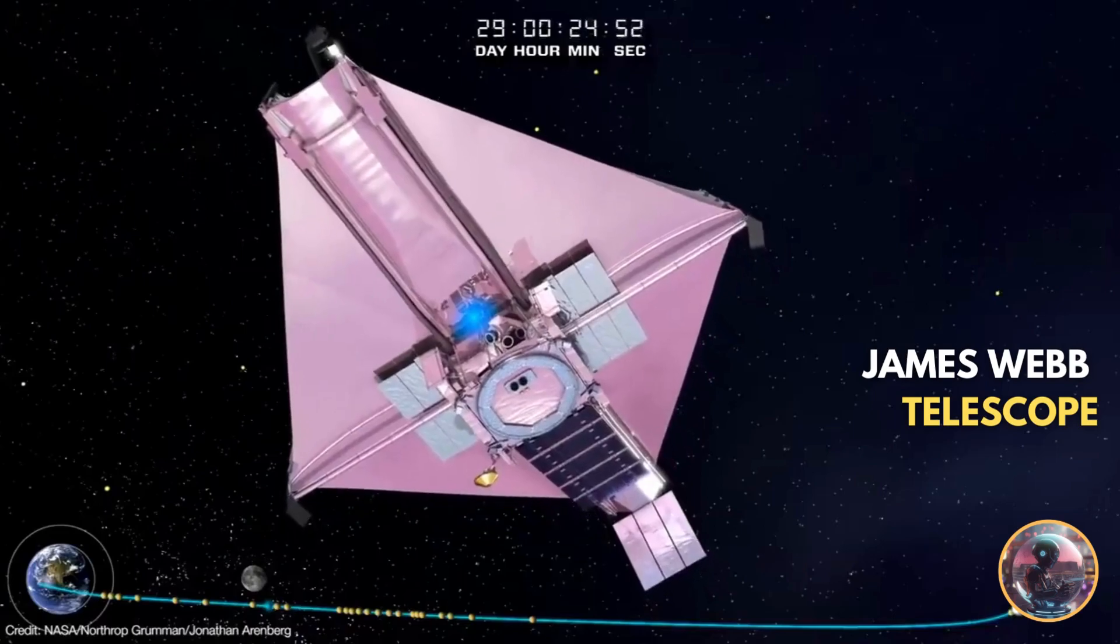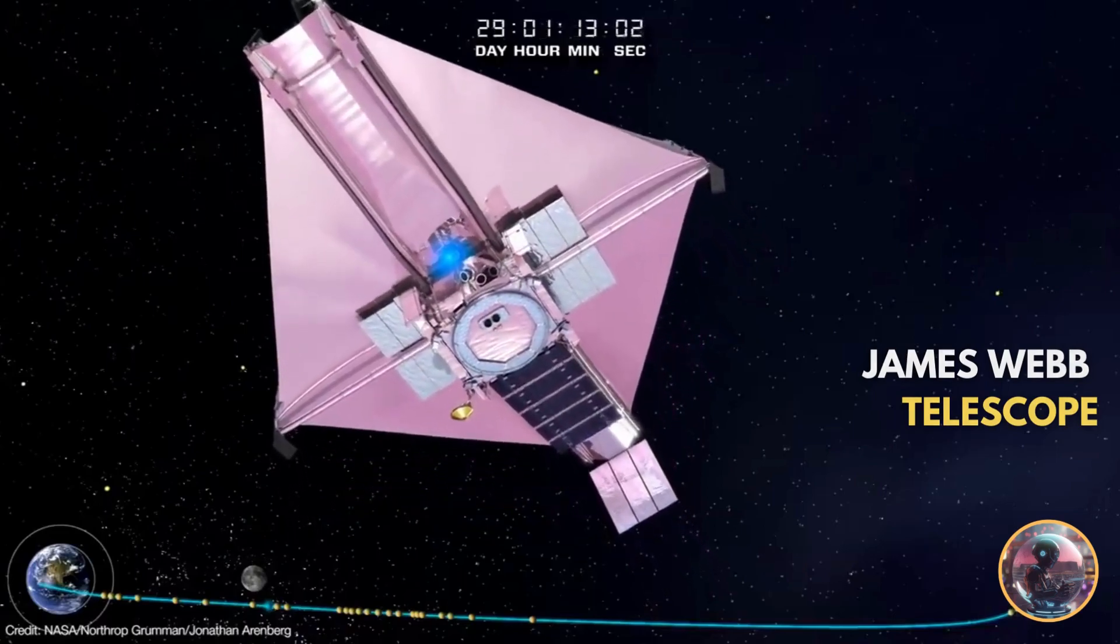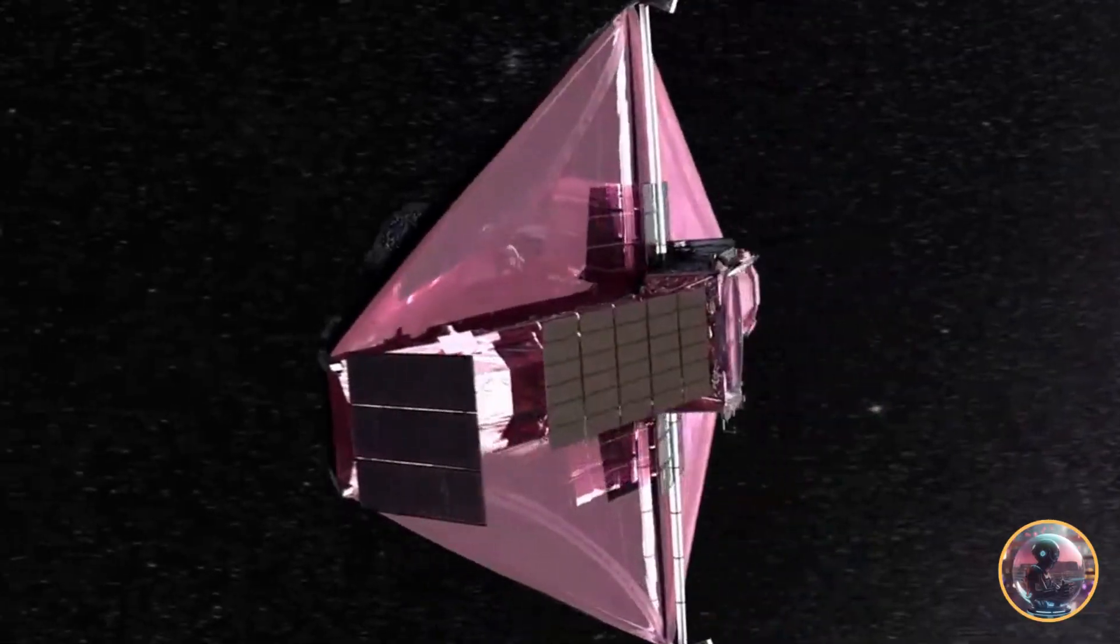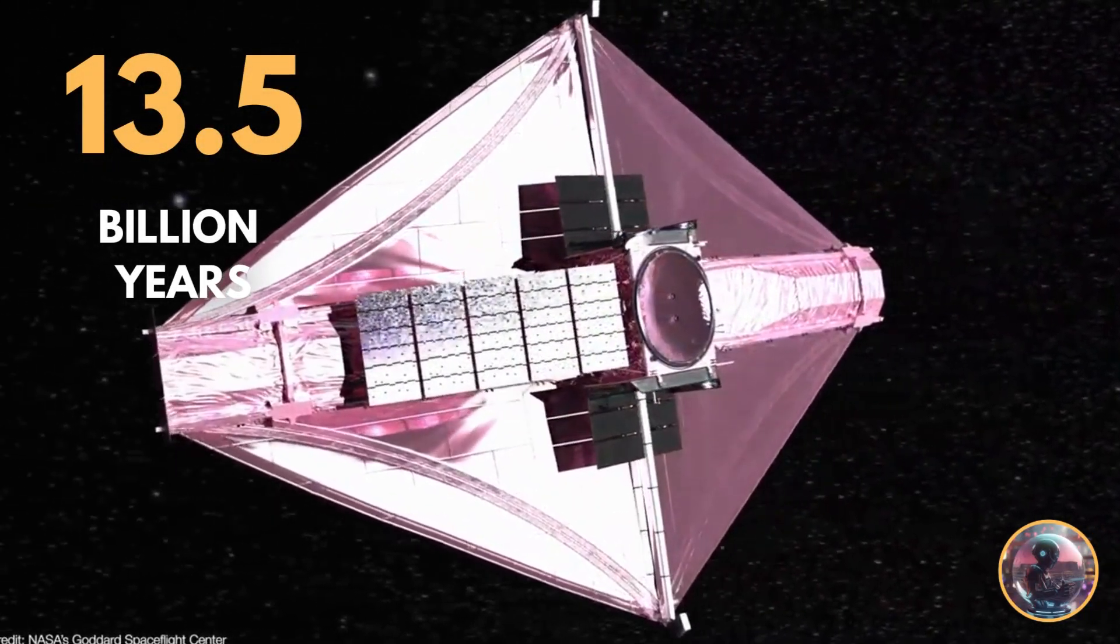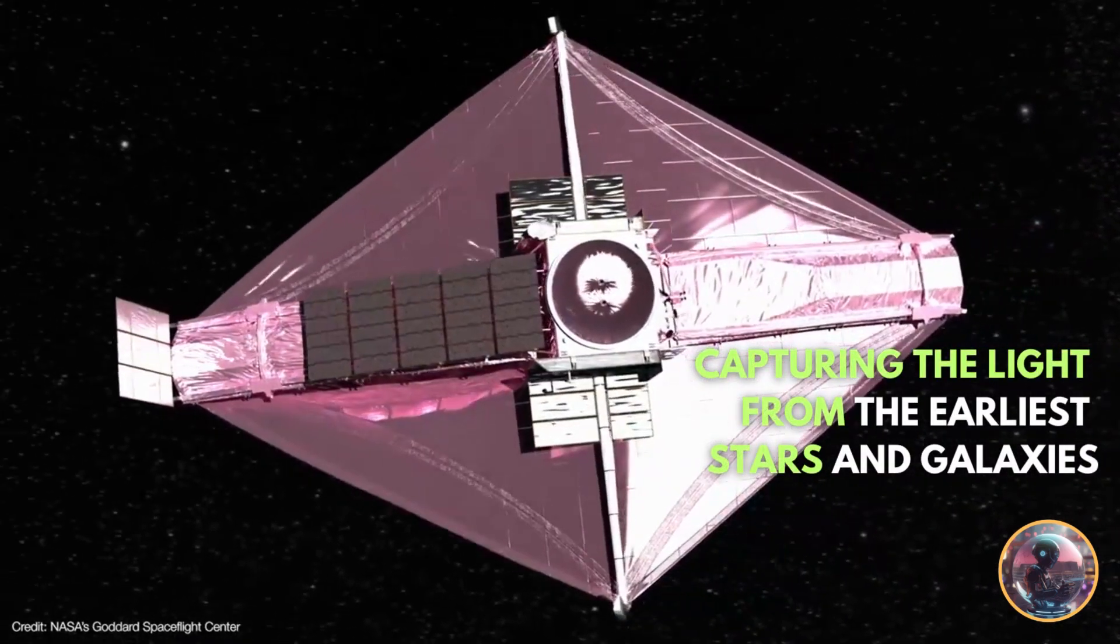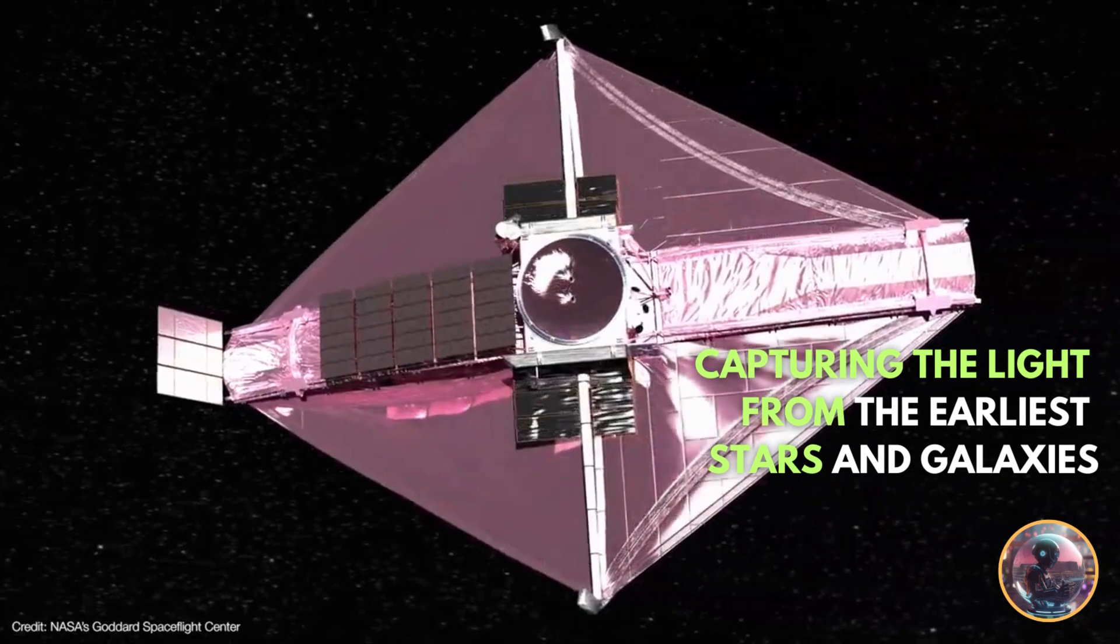...with its advanced mirrors and instruments, is designed to look far back in time, capturing the light from the earliest stars and galaxies formed over 13.5 billion years ago. This allows astronomers to study the conditions of the early universe, observing a younger universe's past.